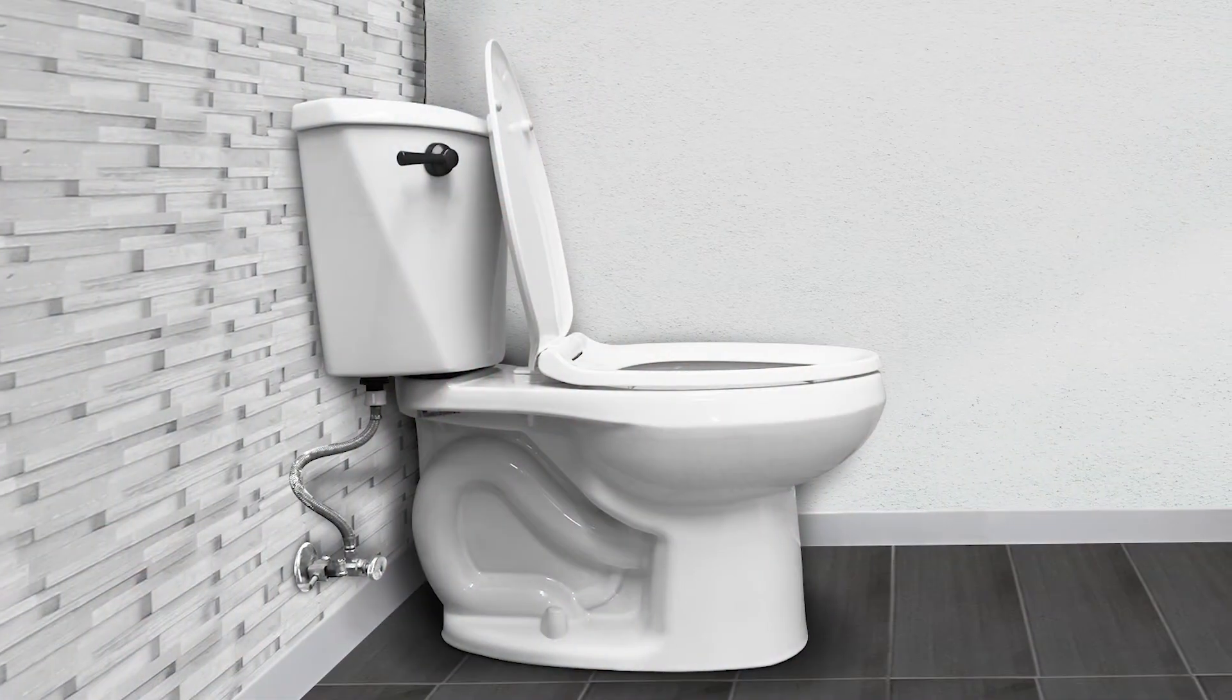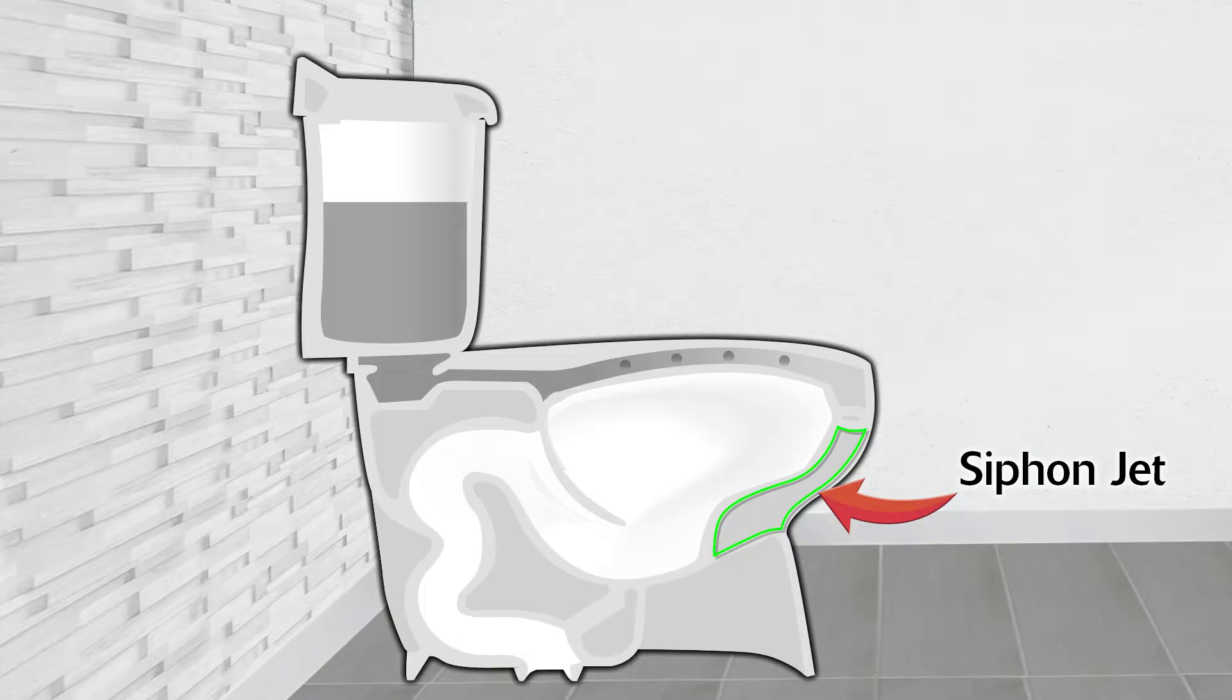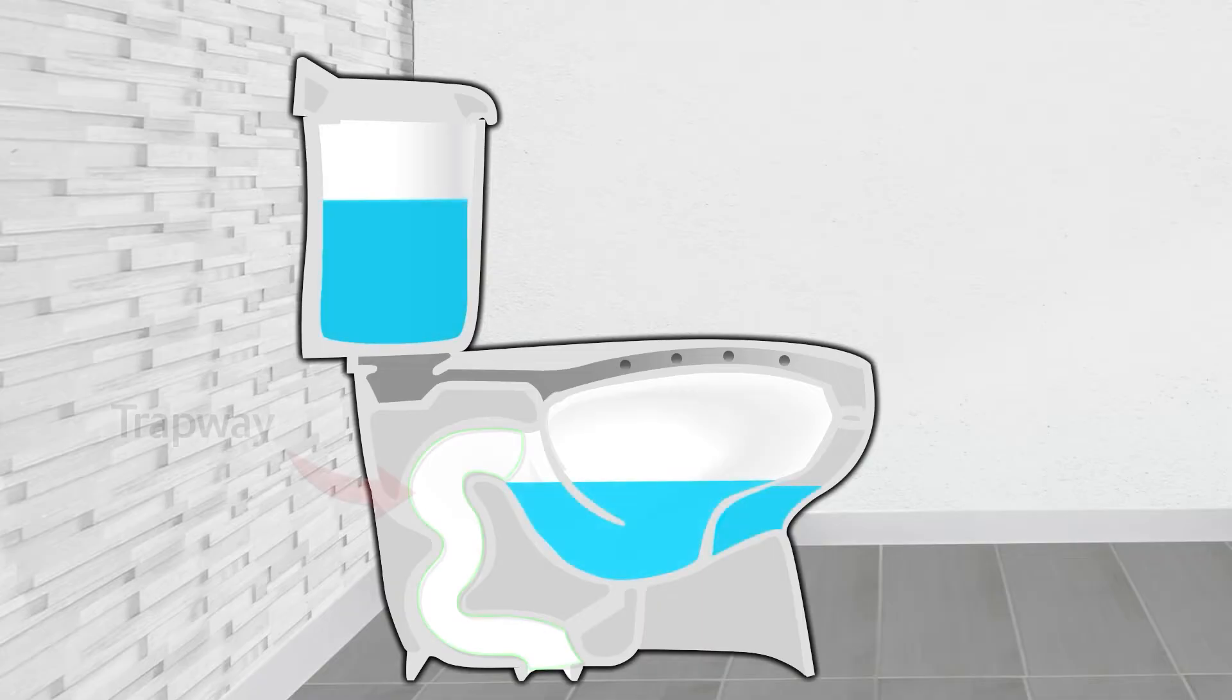In most toilets, water flushed from the tank enters the bowl through the siphon jet located in the bowl outlet, as well as through openings in the rim that help clean the bowl. Just beyond the outlet is an S-shaped pipe called the trapway.